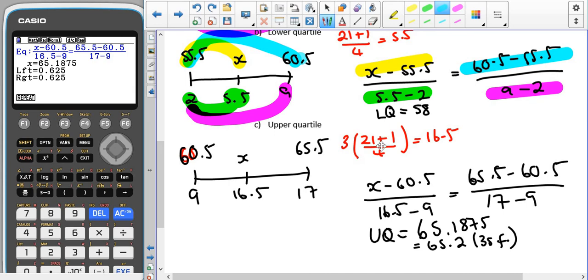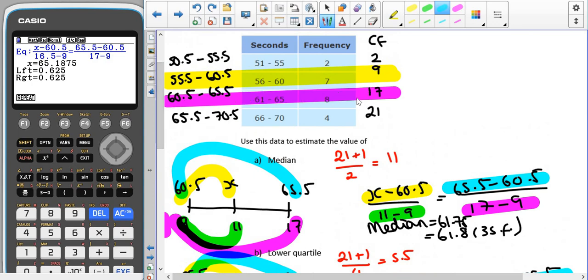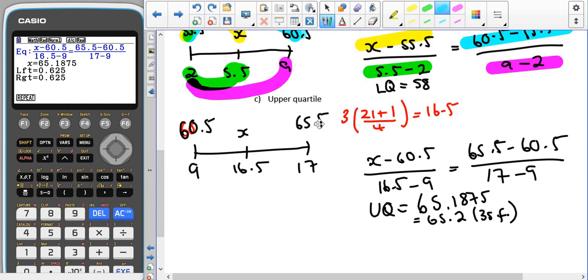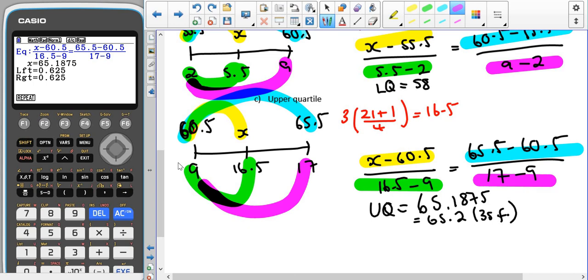And then three times that to get the value for the upper quartile. So it's piece of data number 16.5. If we're having a look here, 16.5 is also in the same group as our median. So we're looking again between 60.5 and 65.5, which still goes between 9 and 17. But this time we're looking at piece of data number 16.5. So we'd have x minus 60.5 divided by 16.5 minus 9 equals 65.5 minus 60.5 divided by 17 minus 9. Which ends up giving us 65.2 to three significant figures.